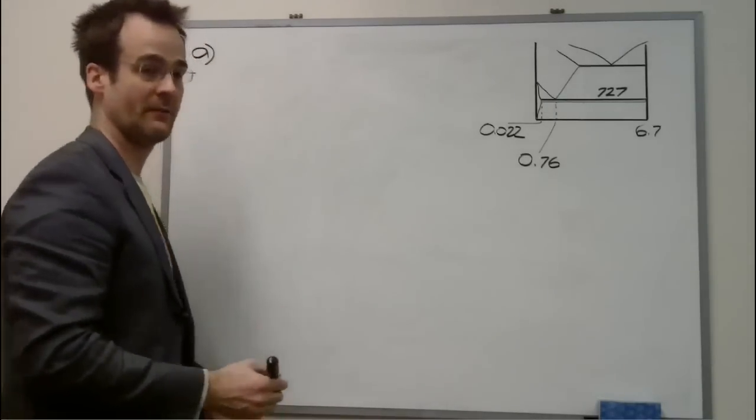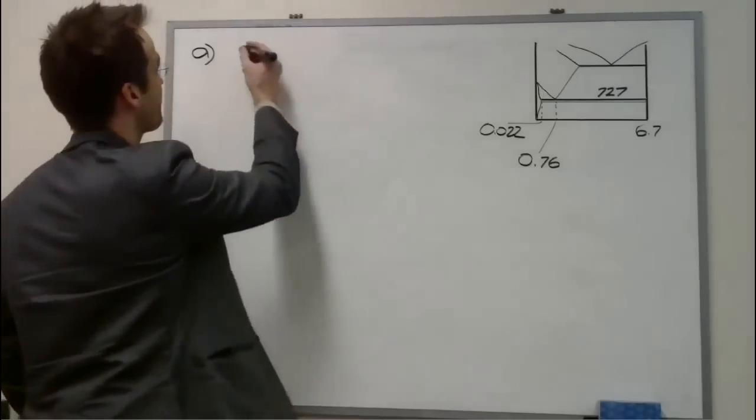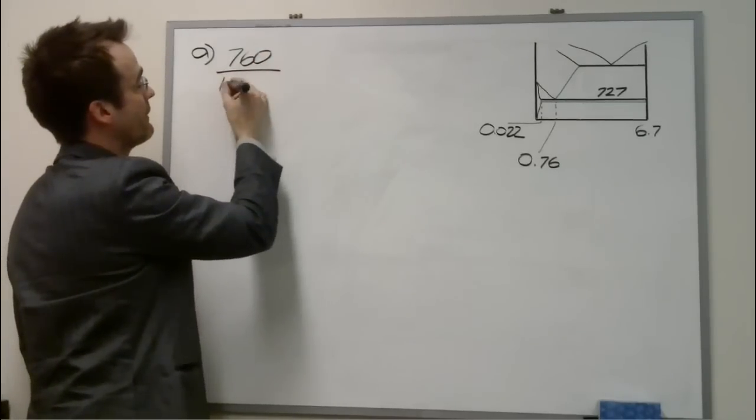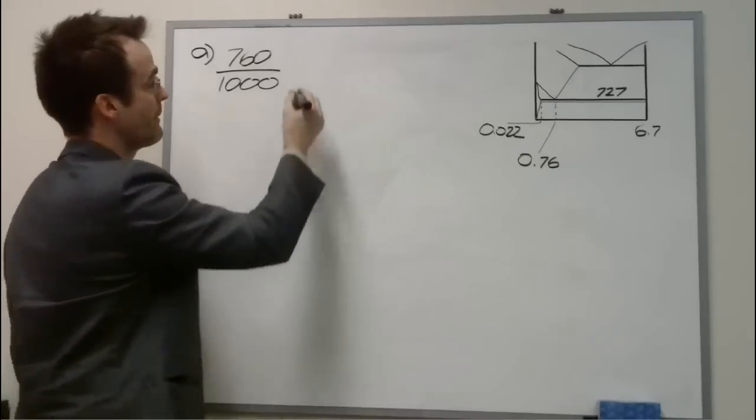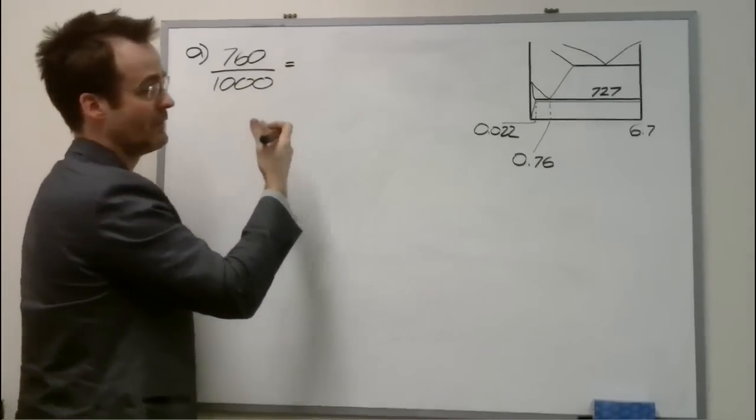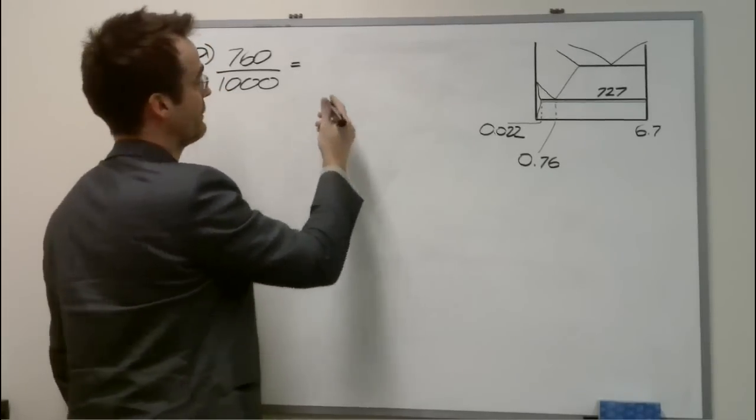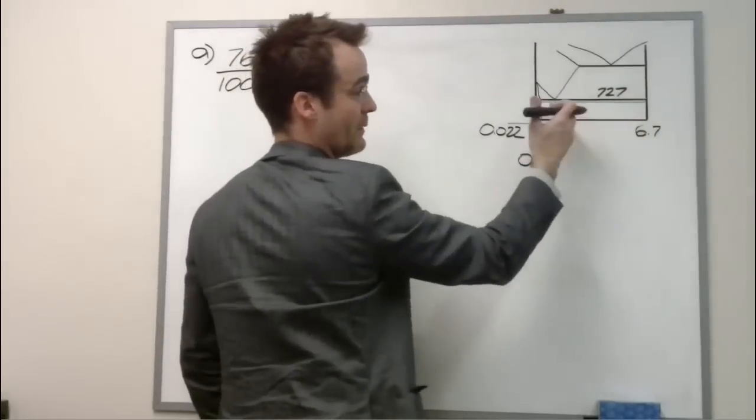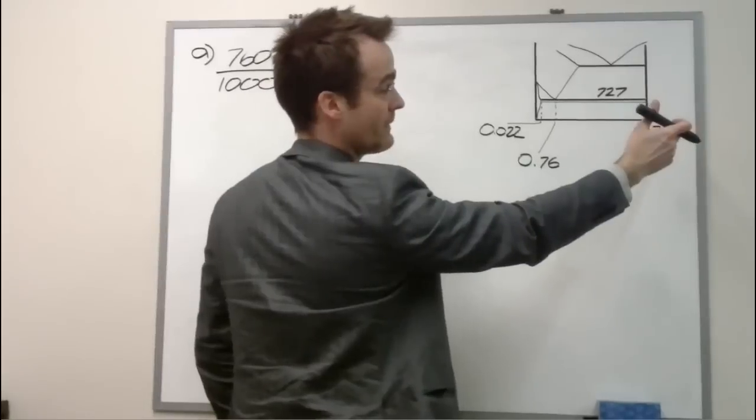Then the question tells us that there's 760 grams of ferrite out of a total 1,000 gram sample, which is actually the result of our lever rule calculation. So now we can set up on the other side of the equation the lever rule itself. So we're in the two-phase alpha plus cementite. We want to determine how much alpha there is. So we take the opposite side of the line.